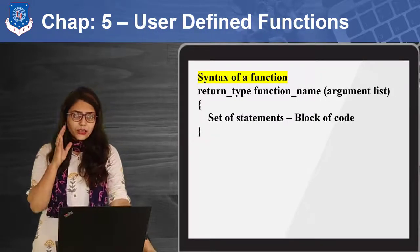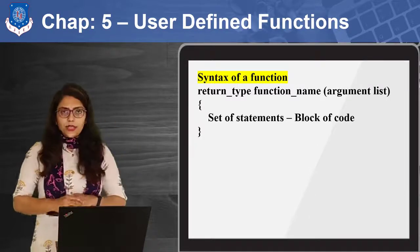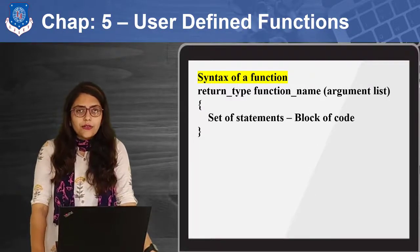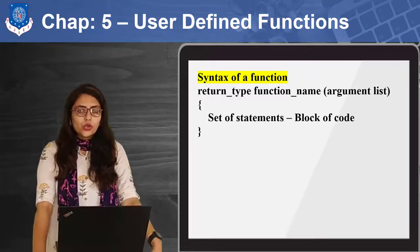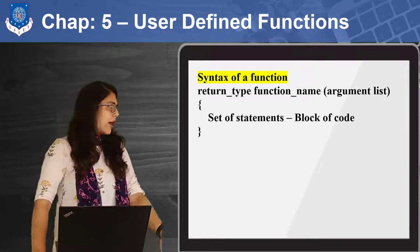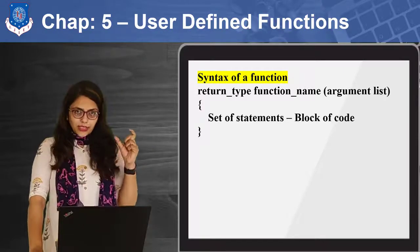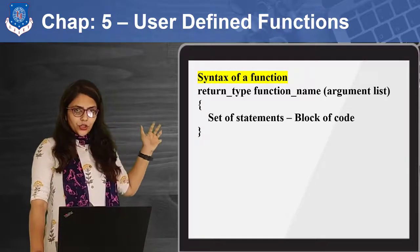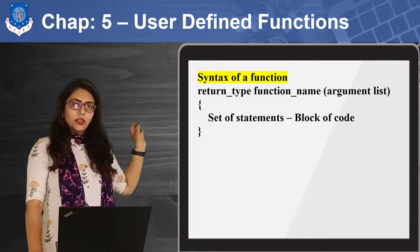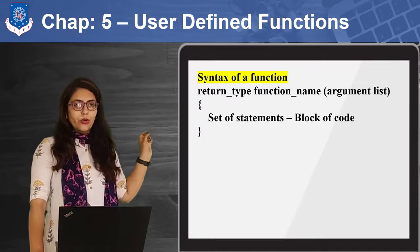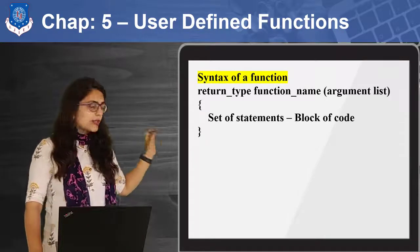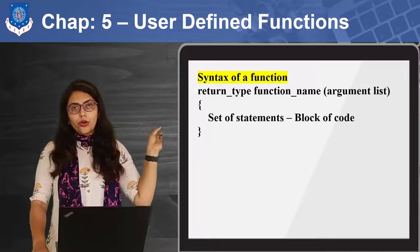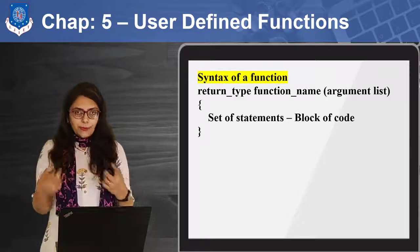As you can see the syntax of a user defined function — how it looks. You have to remember the syntax. First is the return type, then a space, then the function name, then inside round brackets you write the argument list, and inside curly braces you write the block of code that you want to perform.